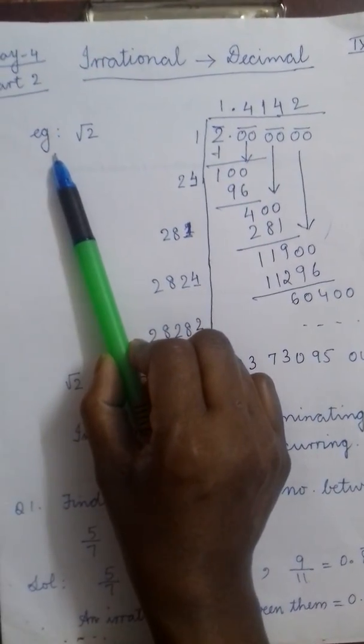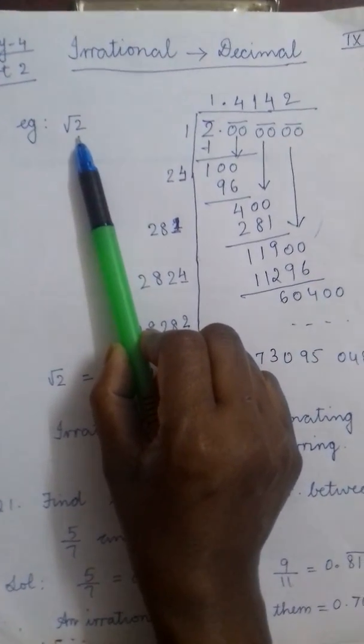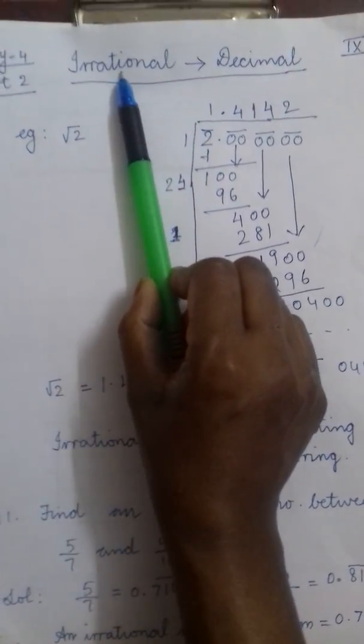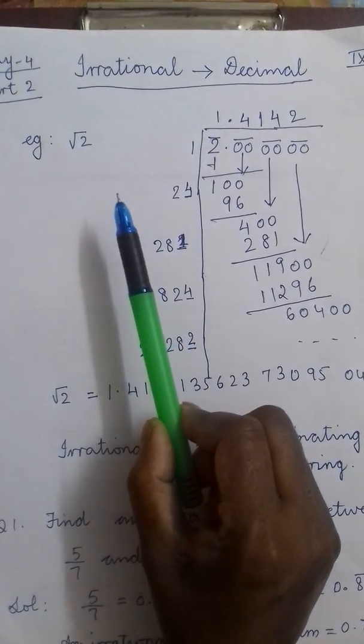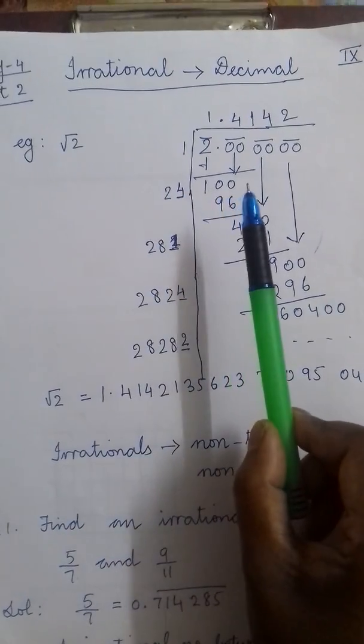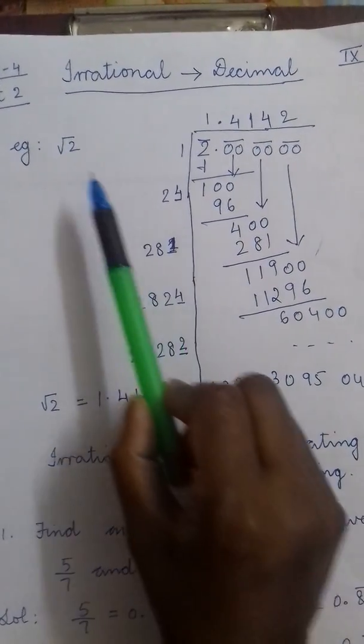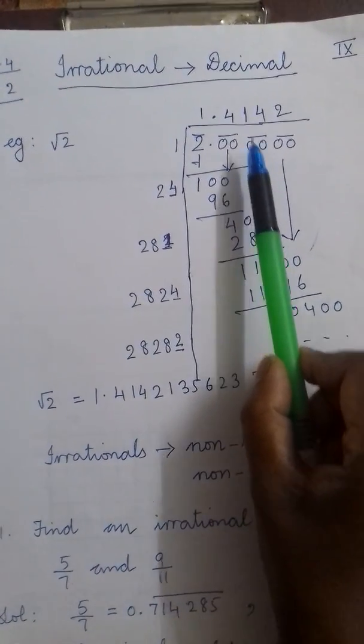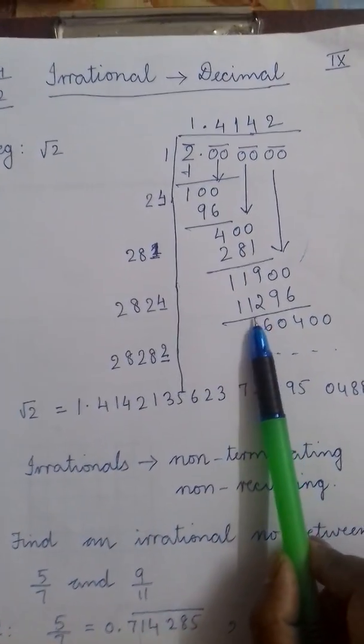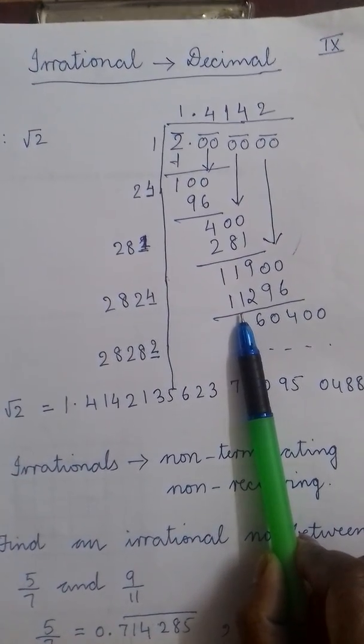Let us consider the example of square root of 2. While learning the definition of irrational numbers, we have seen that root 2, root 3 etc are irrational numbers. So let us find out its decimal value. And for square root of a number, decimal value can be found out by performing long division. I hope you remember long division which you have done in class 8.